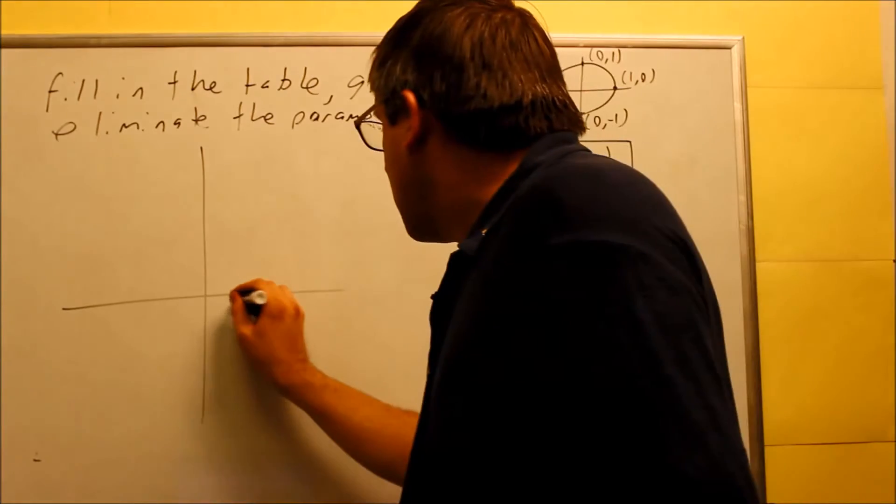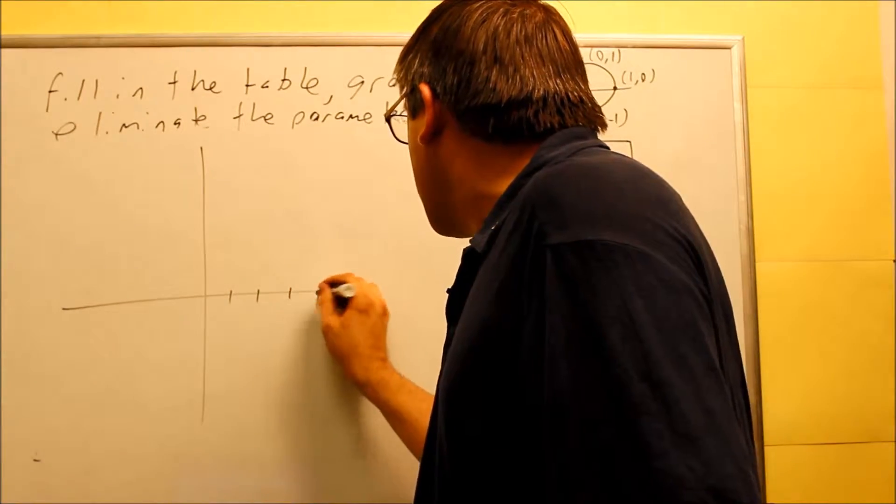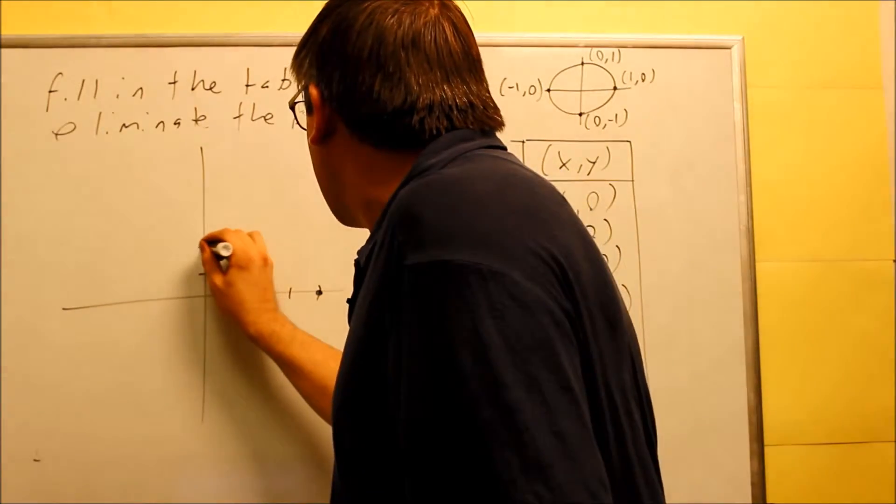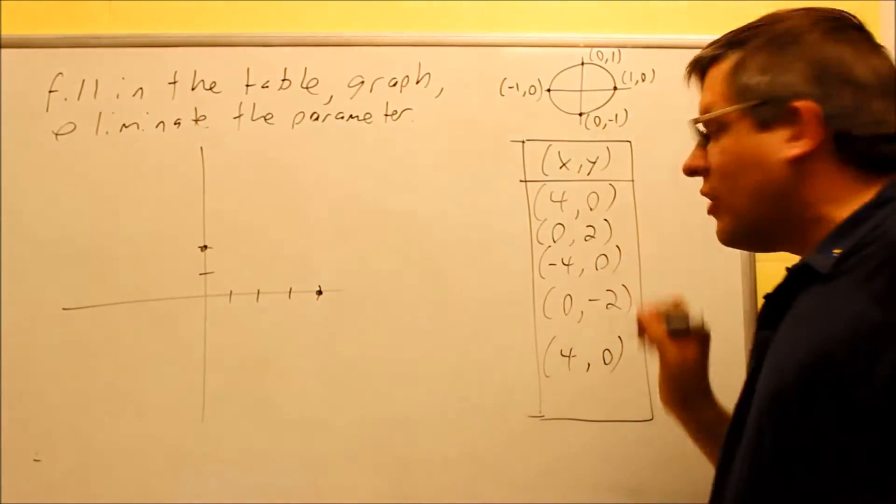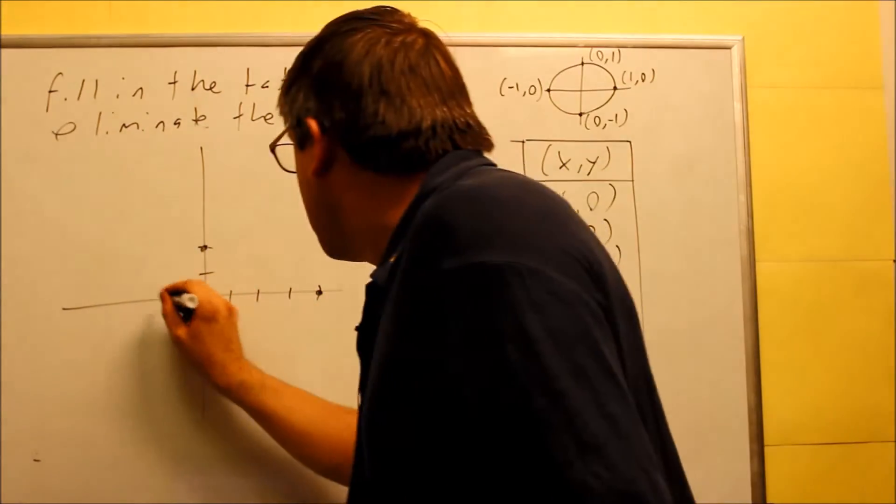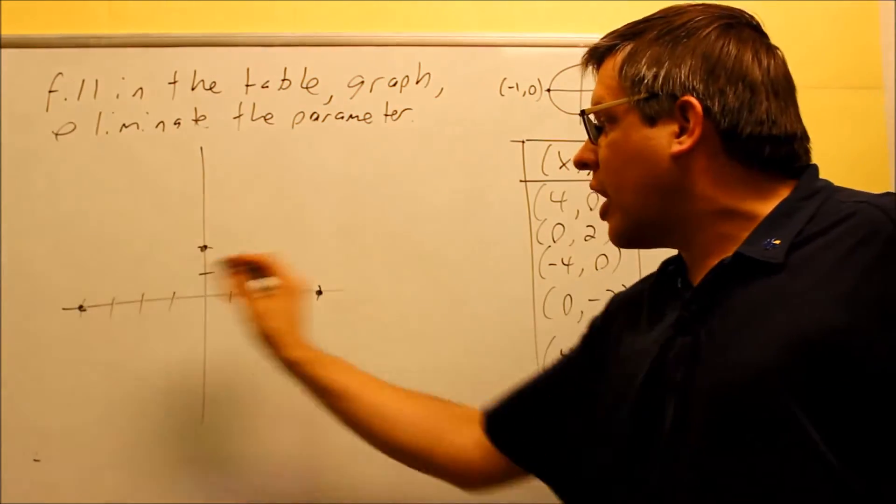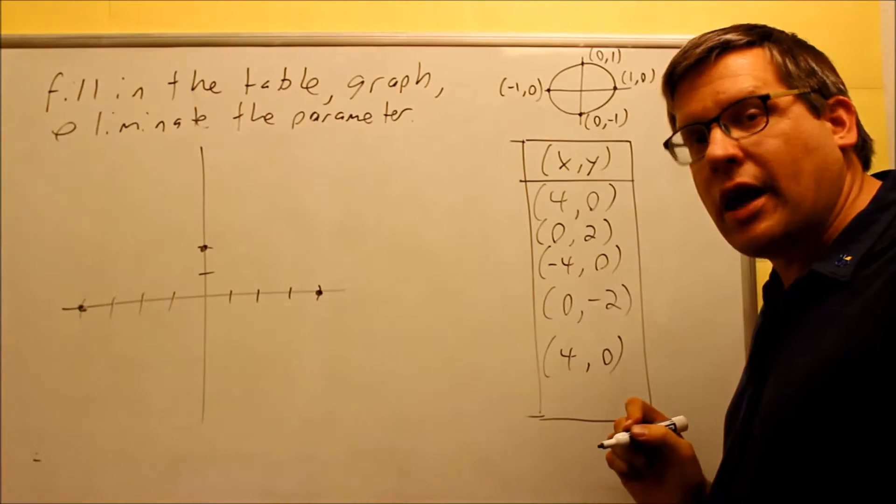All right. So I have (4, 0). So (4, 0) is right here. Next, I have (0, 2). (0, 2) comes up here. And then I have (-4, 0). (-4, 0) is right here. That's the next point. So notice that the points are actually going this direction. They're going counterclockwise.